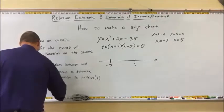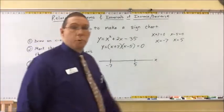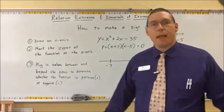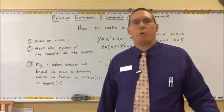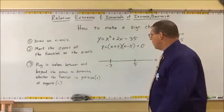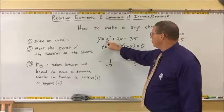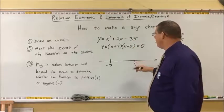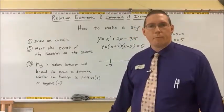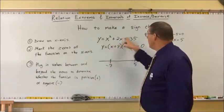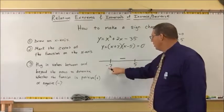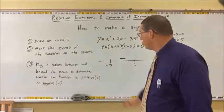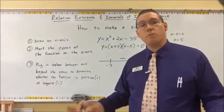Step three: plug in values between and beyond the zeros to determine whether the function is positive or negative. Pick any number between the zeros — between negative 7 and 5. Let's choose 1. Plugging 1 into the original function: 1 squared is 1, 2 times 1 is 2, so 1 plus 2 is 3, and 3 minus 35 is negative 32 — so we get a negative value. Therefore, we put a minus symbol between negative 7 and 5, meaning every output value between negative 7 and 5 is negative.